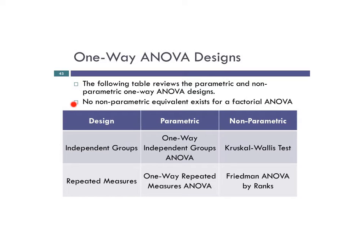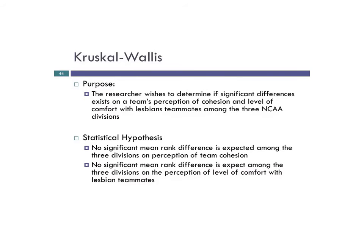No non-parametric equivalent exists for factorial ANOVA. So let's go through an example. The researcher wishes to determine if significant differences exist on teams' perception of cohesion and level of comfort with lesbian teammates among NCAA three divisions. This is data pulled from my master's thesis. This is actually two different examples because I've identified two different dependent variables: perception of team cohesion, and level of comfort with lesbian teammates.